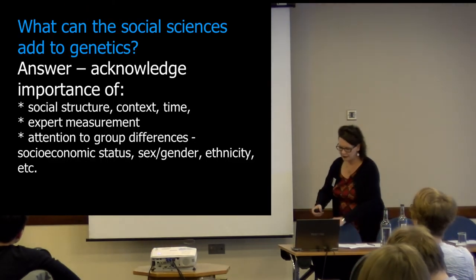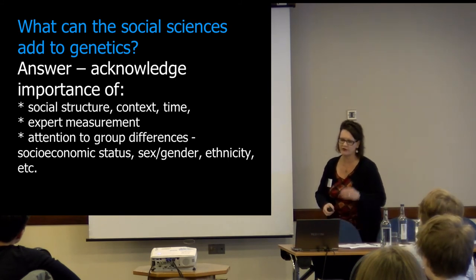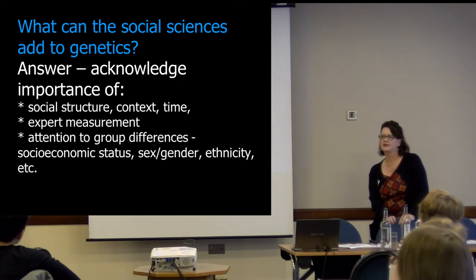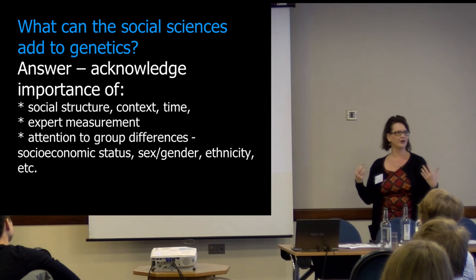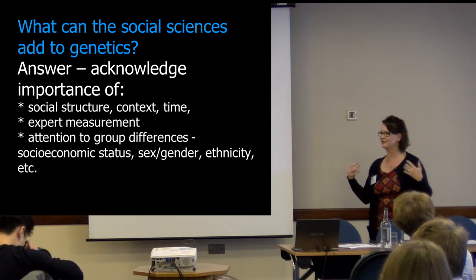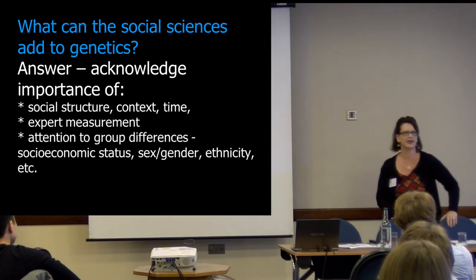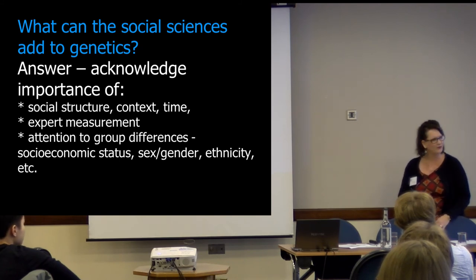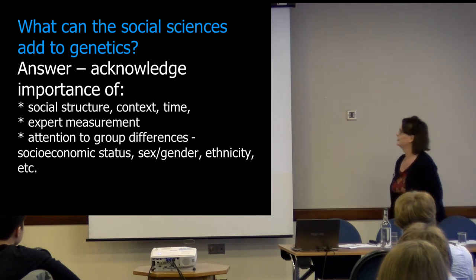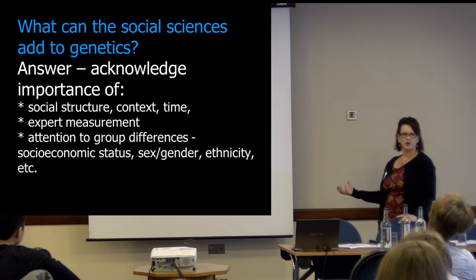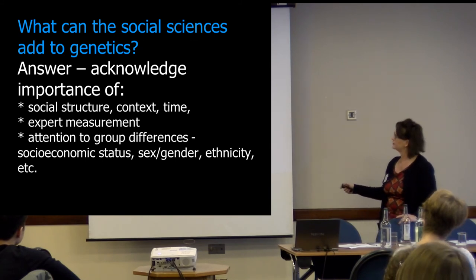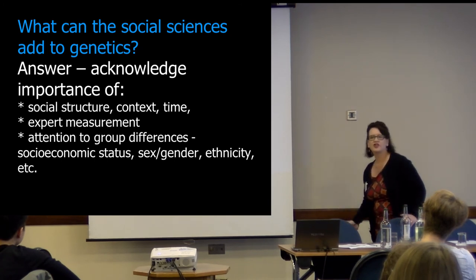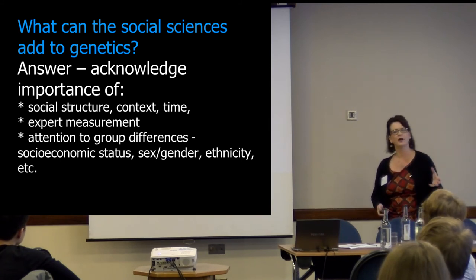One thing I didn't think about when I entered this field was how important we social scientists would be for molecular genetics — not just how important genetics would be for my research. We actually have quite a bit to offer to the field of molecular genetics. We think about the social context and the environment, and we measure it in excellent ways. We focus on group differences — socioeconomic status, sex differences, gender differences, and ethnicity. And that's something that's missing from a lot of this research — it can be very blanket.